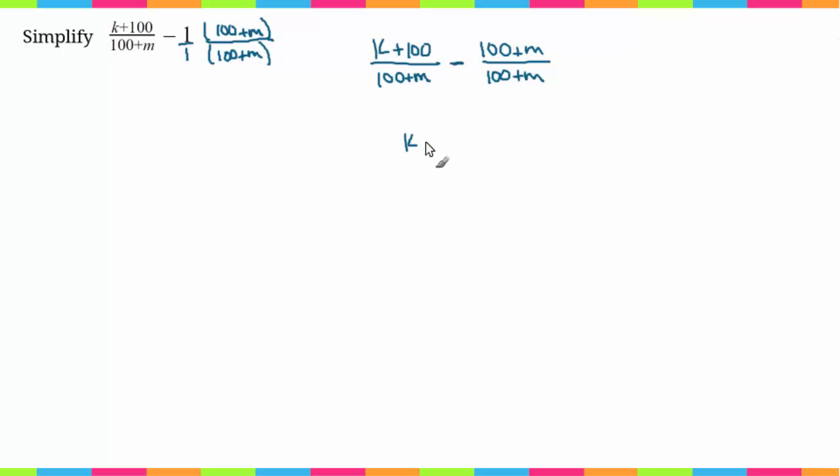So we have k plus 100 minus 100 minus m, and that's a very important point to make. You're subtracting this entire thing, so this minus sign gets distributed to both of these terms, and this is going to be over 100 plus m.